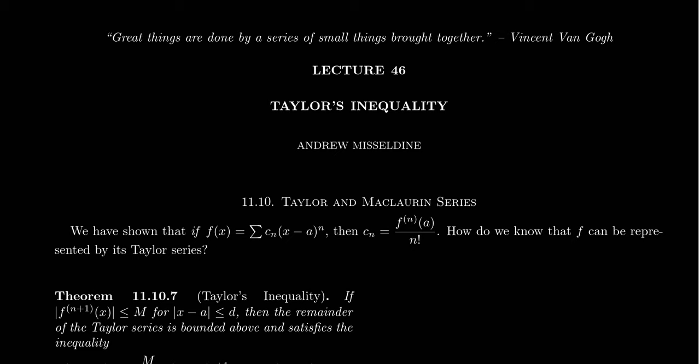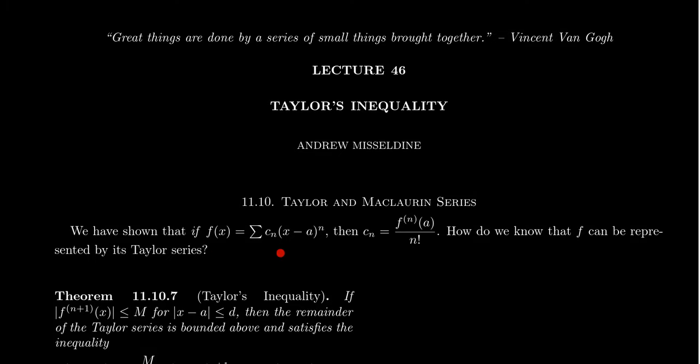We learned last time about Taylor's theorem, which tells us that if a function has a power series representation, then that power series will necessarily be given by the formula you see right here. The power series would be the sum of c_n times (x - a)^n, centered at a. The coefficient sequence is given by the nth derivative of f evaluated at a divided by n factorial. That's what the formula for a power series representation has to look like.